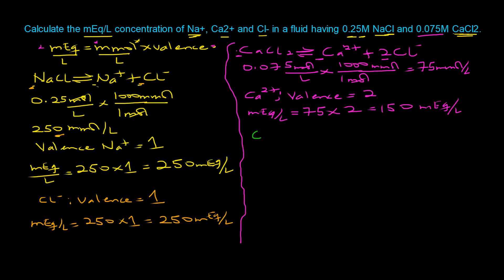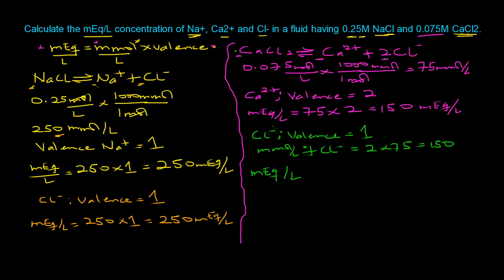For the chloride ion from calcium chloride, the valence is one (absolute value of −1). Due to the one-to-two stoichiometric ratio between CaCl₂ and Cl⁻, the millimoles per liter of chloride is 2 × 75 = 150 millimoles per liter. So mEq/L = 150 × 1 = 150 milliequivalents per liter.